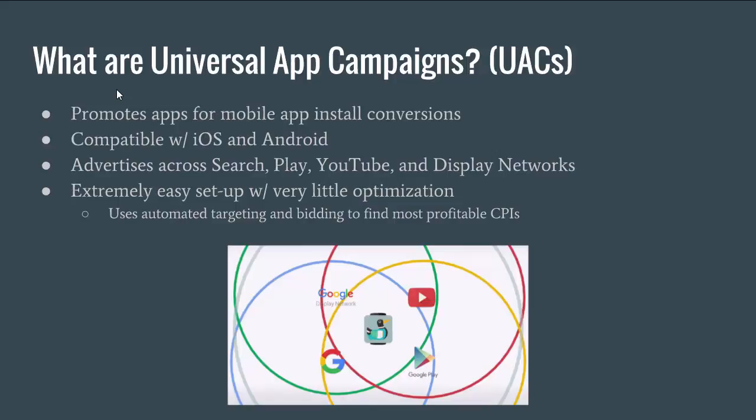UACs advertise across the search network, the play network, the YouTube network, and the display network — so it's all over the place. If you don't have a video to promote your app then you won't be able to advertise on YouTube. Same thing with the display network — you're going to need image ads. I'll go over the specs and where to find more information so that if you want to advertise on YouTube with your app you'll know how to do that.